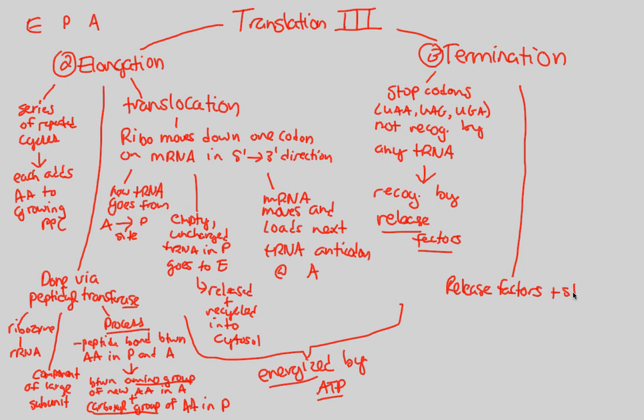Release factors plus stop codons will happen at the A site. Let's imagine at the A site right now we have a UAA reading. Once we have a UAA reading from the mRNA transcript at the A site, that is a clear sign that we need release factors. So release factors will come in and bind to this UAA. Once we bind to it, we're going to have the following occur.